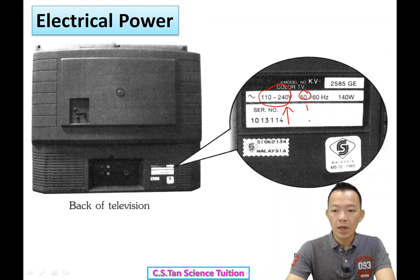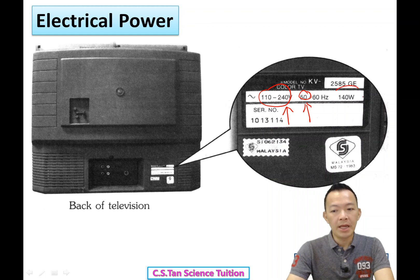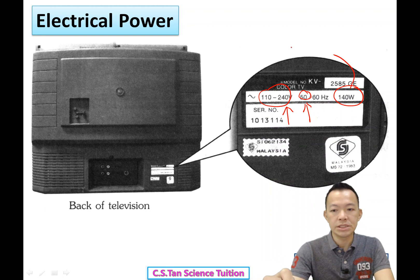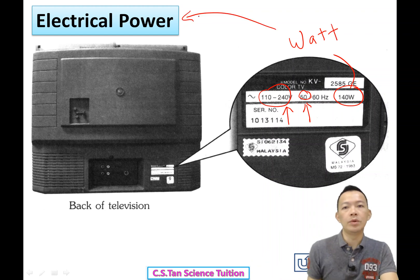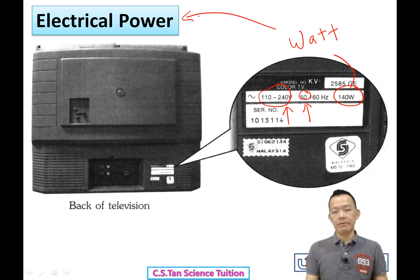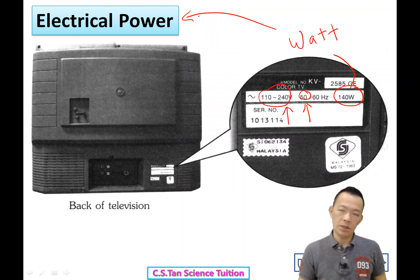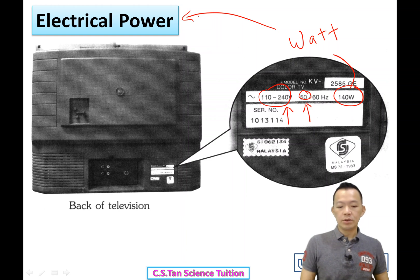The label also shows something like '140 watts'. 'W' means watt, which is the unit for power. So the watt is just the standard unit for power. But the question is — what is power? It's not easy to understand right away.